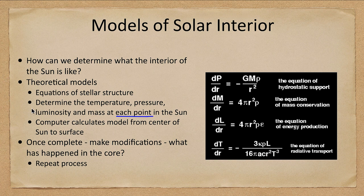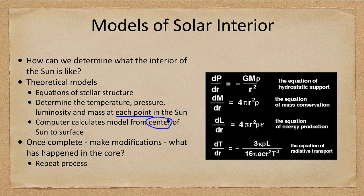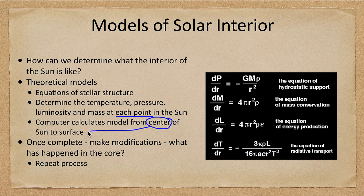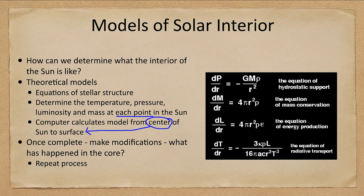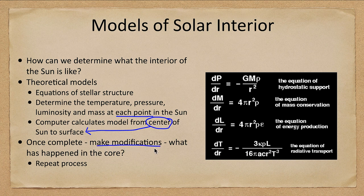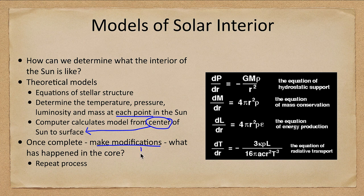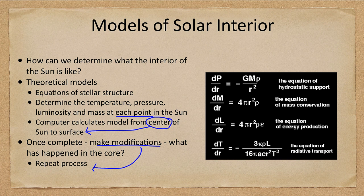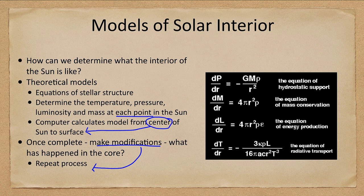So how can we do this? Well, it's a computer model. You put in your estimates for what things are like at the center of the Sun and then you calculate. You integrate outward to the surface and then you find out, because we can observe the properties at the surface. We know what the mass of the Sun is, we know what the luminosity and the surface temperature of the Sun are. So if our initial assumptions are incorrect, then we will end up with numbers at the surface that are not matching the Sun, and then we make modifications as we do in the scientific method. We know those properties.